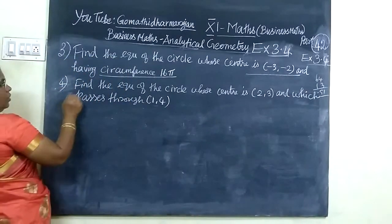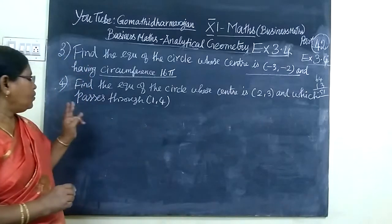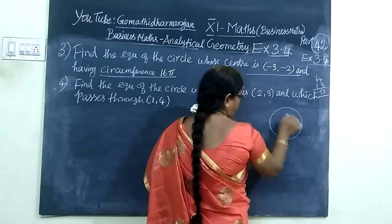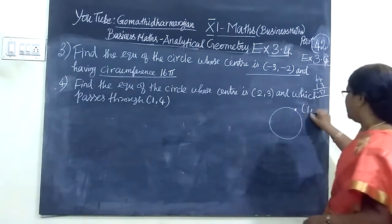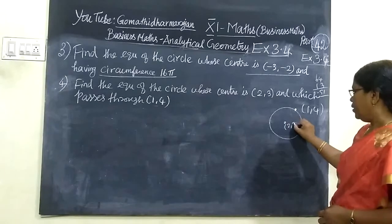Now we see question 4. The center is (2, 3) and it passes through (1, 4). You have given a circle with center (2, 3) passing through point (1, 4).